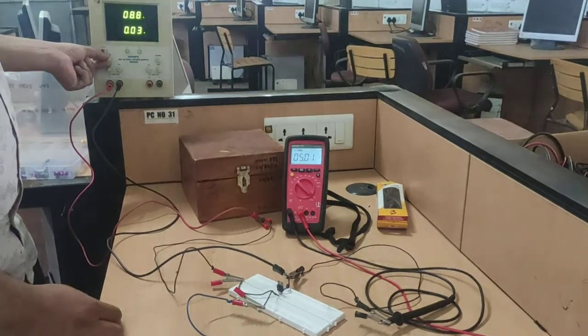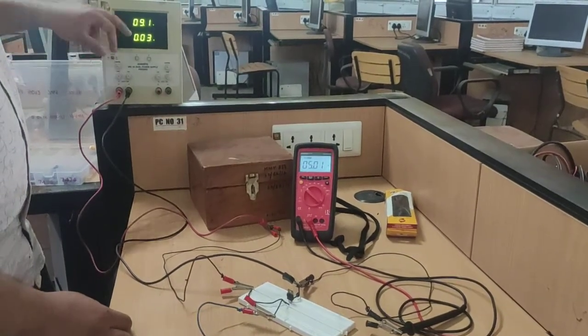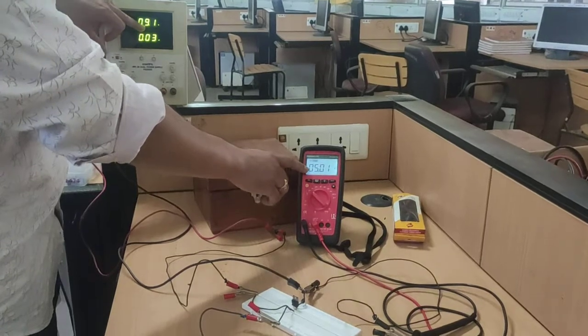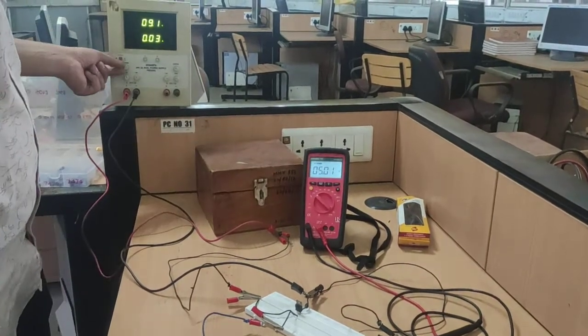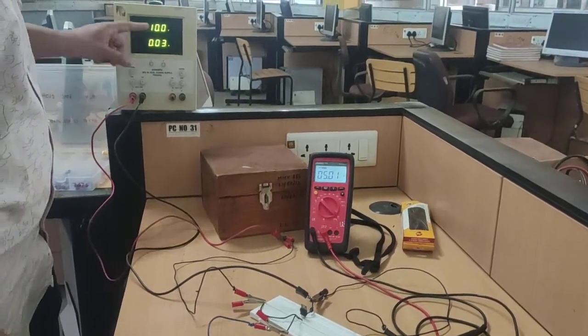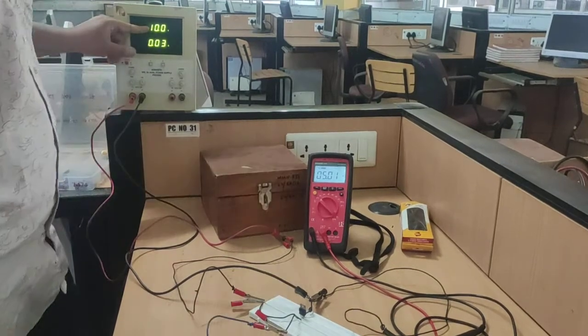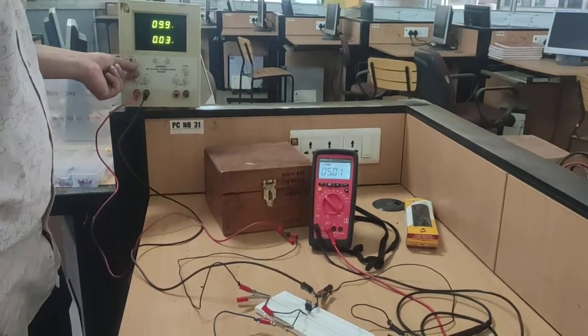So now input is 9.1 but still the voltage is fixed at 5.01. Again I vary the voltage to 10 and again voltage is output side voltage is constant at 5.0.